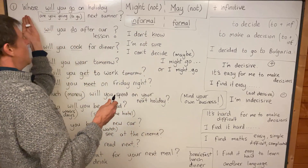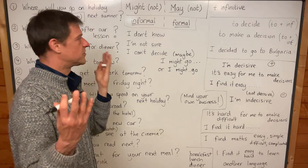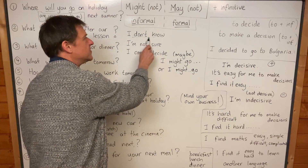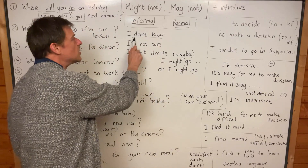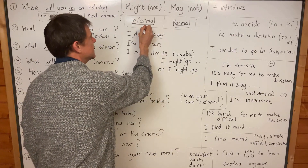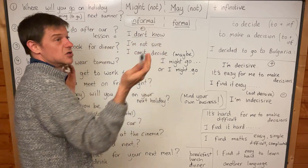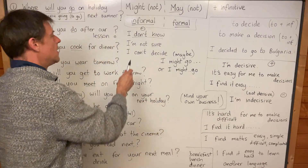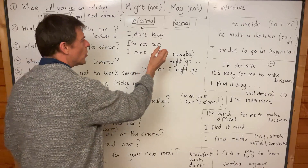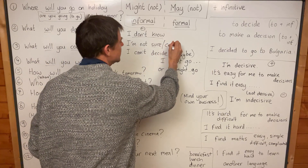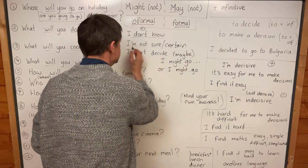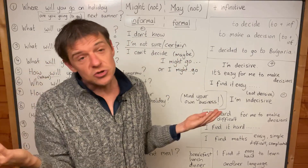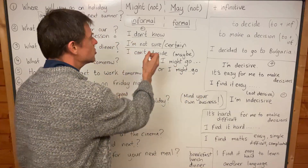So where will I go on my next holiday? I don't know. Remember present simple — use don't in negatives. I don't know. Do you know where you will go? I'm not sure. I'm not certain. This means I don't know.